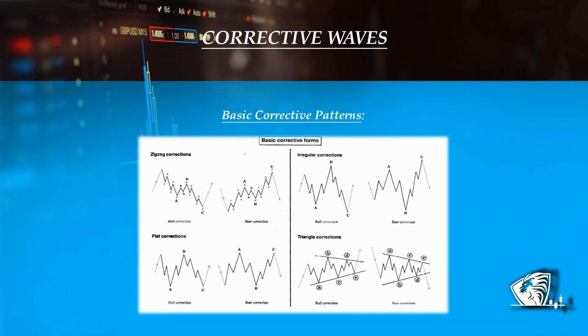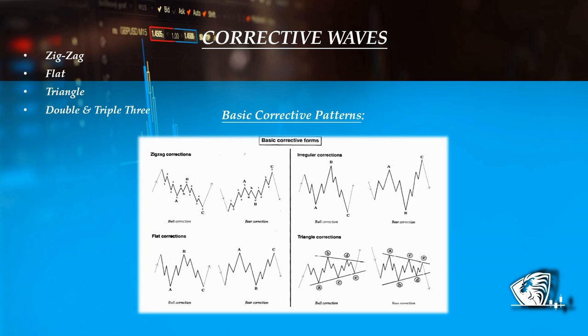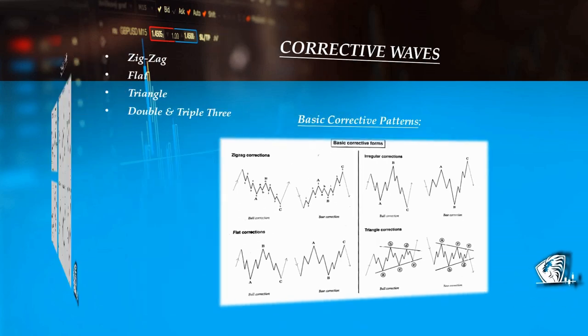Corrective waves, however, come in five forms: zigzag, flat, triangle, double threes, and triple threes.